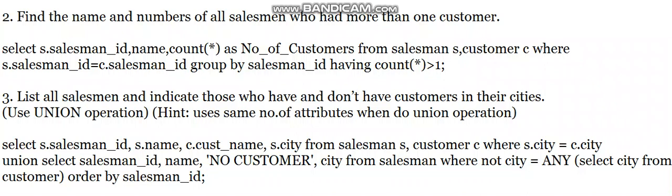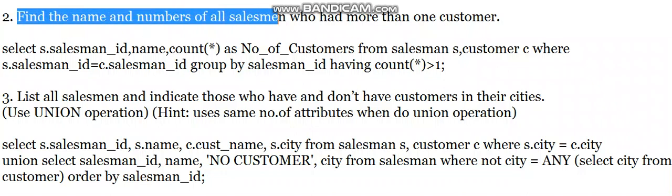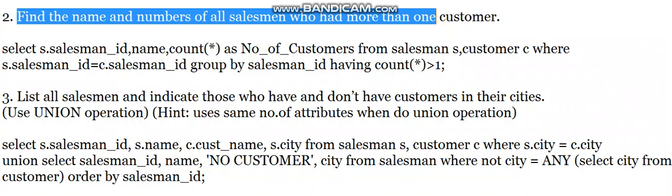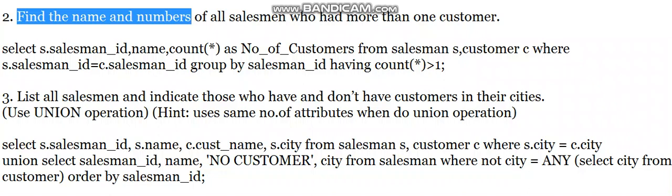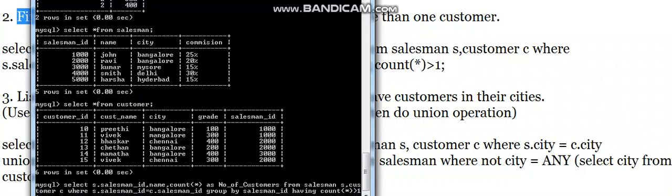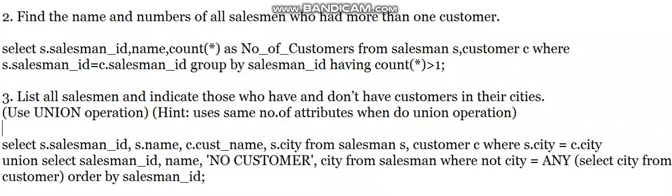In this video we will see the second query: find the name and number of all salesmen who had more than one customer. We need to find the number of customers — it should be more than one. If you observe the customer table, salesman ID 1000 (John) has two customers and salesman ID 2000 (Ravi) has three customers.